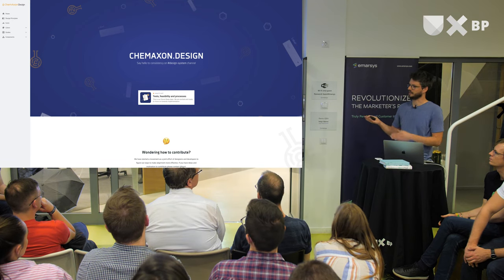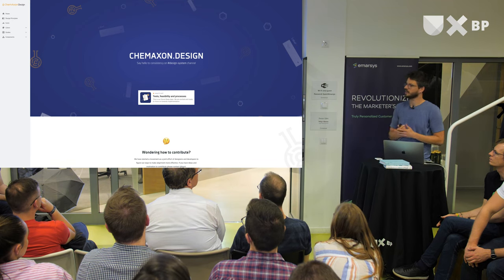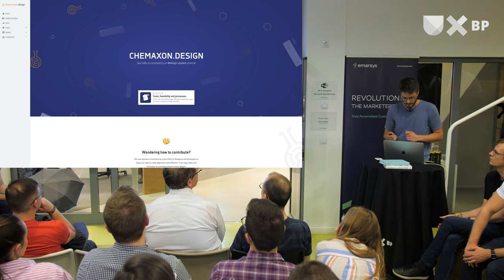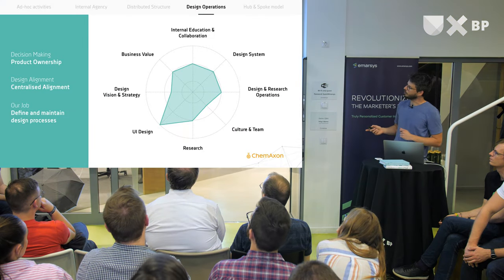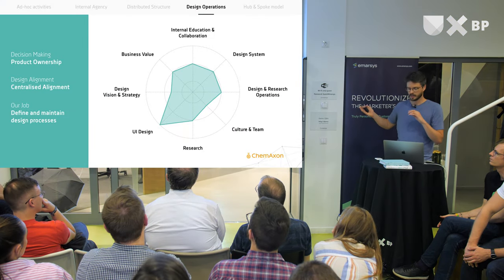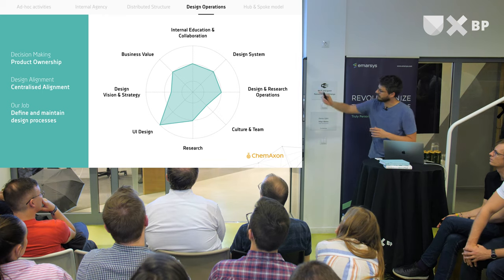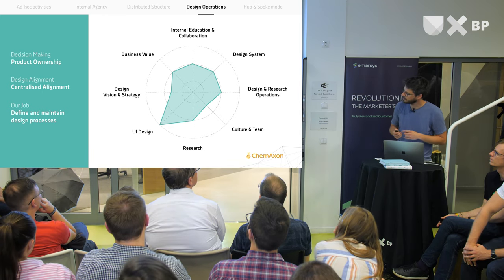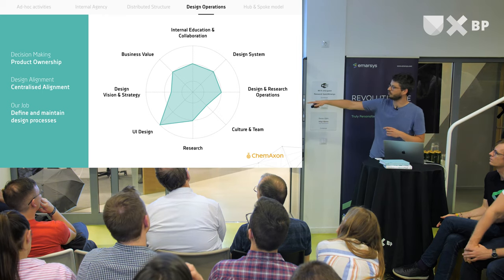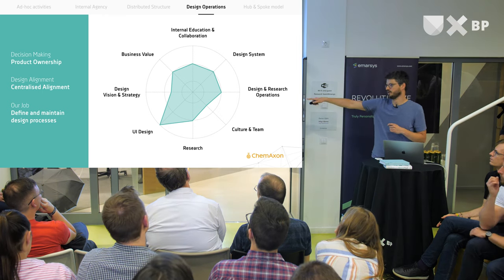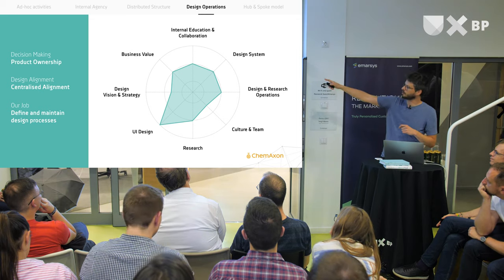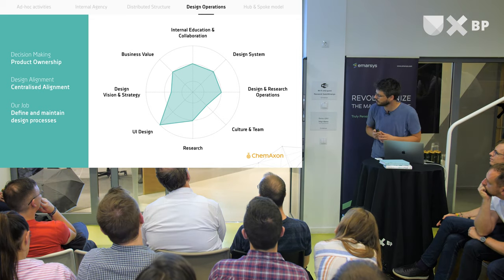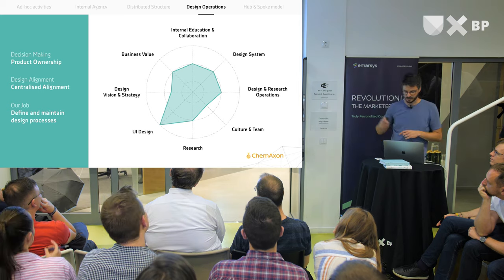Developers started asking for ideation sessions and low-fidelity prototypes before they could even estimate the amount of work, which was quite good. And finally we had our first version of the design system — we could show something and say: this is how we imagine the future of Chemaxon design. That's where we are at the moment. We still have to focus a lot on the UI design part because we want to build a design system, and design operations have also become an important part — creating processes that can be used across the whole company.